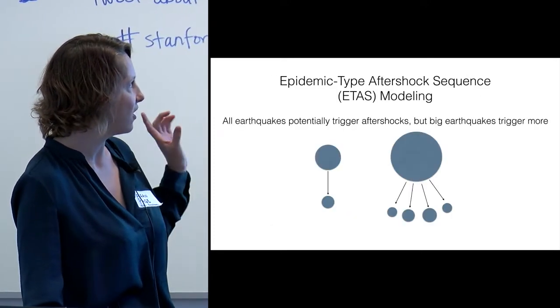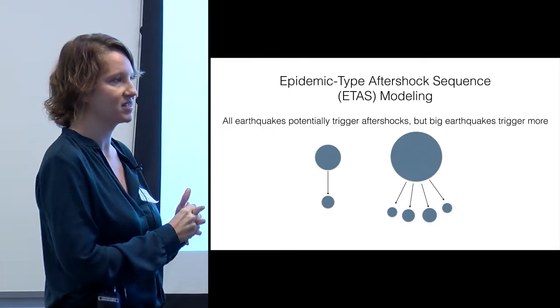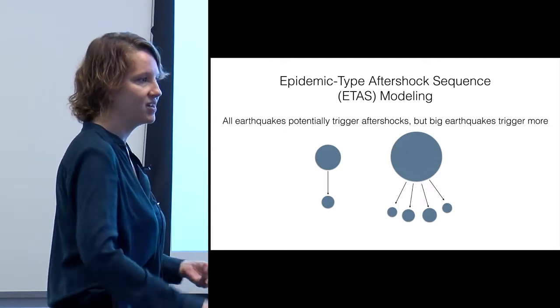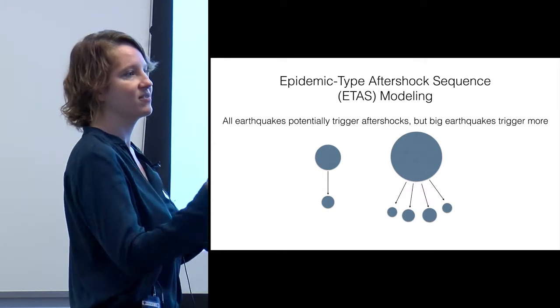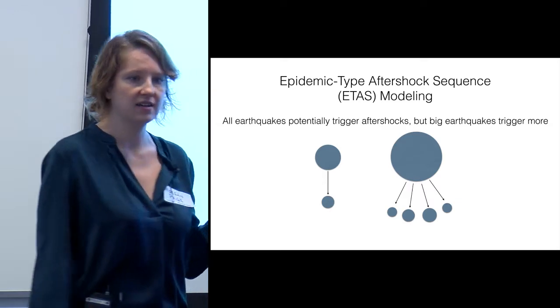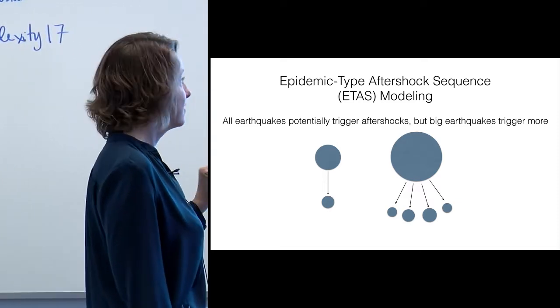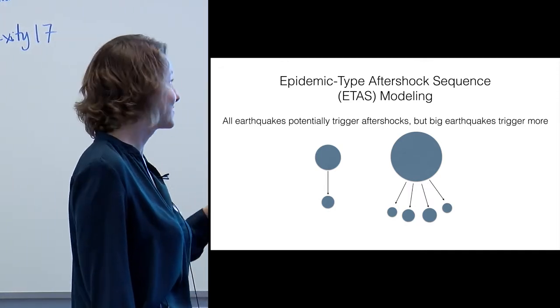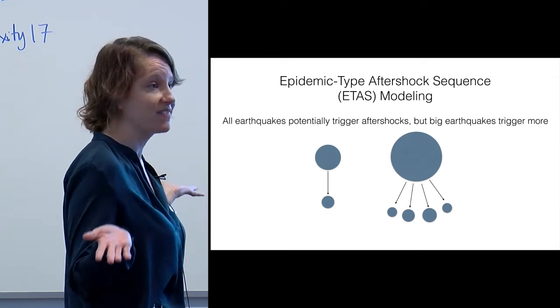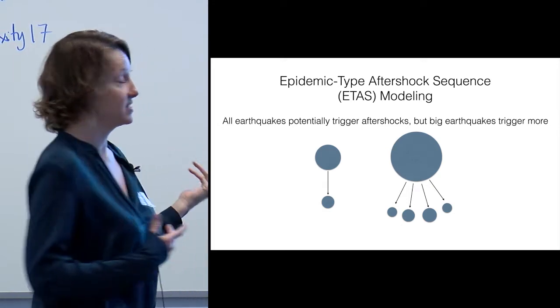So we can combine all these rules into something called an epidemic-type aftershock sequence model, or ETAS. This is modeling earthquakes as an epidemic, sort of as a contagion. One earthquake can trigger more, those earthquakes in turn can trigger more, like how a disease spreads through a population. And this modeling is the basis of our most successful earthquake forecasting methods to date. It's not everything that's going on in earthquakes because there's really no physics in it, but you can get basically 95% of the signal in catalogs. You can reproduce it with these types of models.